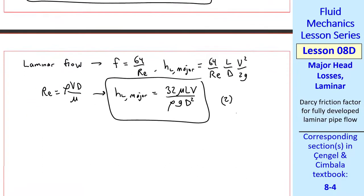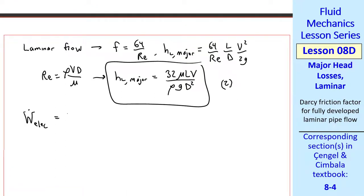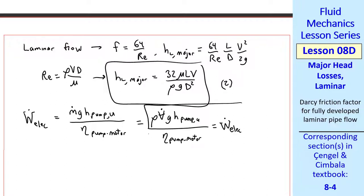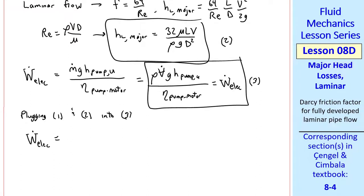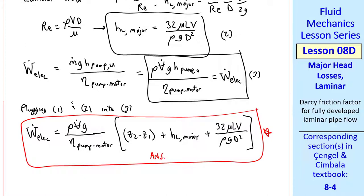We're asked for the electrical power supplied to the pump. We'll call this W dot electric. And if you go back to a previous lesson, we defined pump efficiency this way, where now we're talking about the pump and the motor combination, and this is the electrical power, not just the shaft power. Since we have V dot, M dot is rho V dot. So this is the equation we'll use for W dot electric. I'll call that equation 3. We plug equation 1 and equation 2 into equation 3 to get our final expression for W dot electric. W dot electric is rho V dot G over eta of the pump motor times the quantity Z2 minus Z1 plus HL minor plus HL major, which comes from equation 2. This is our answer in variable form.